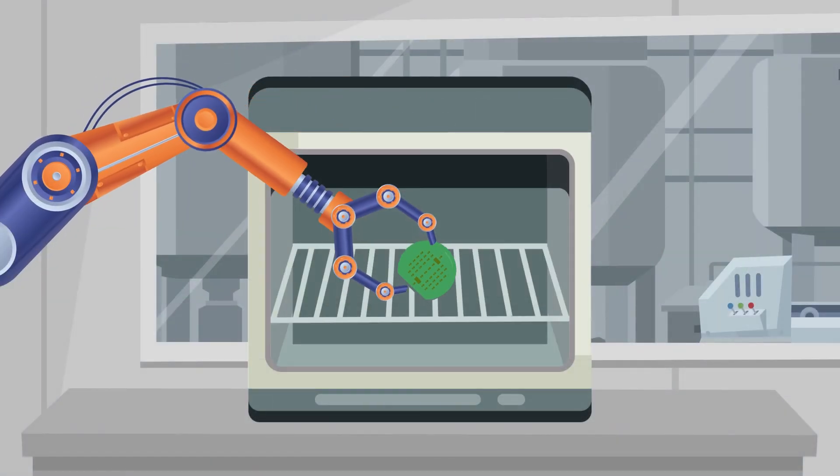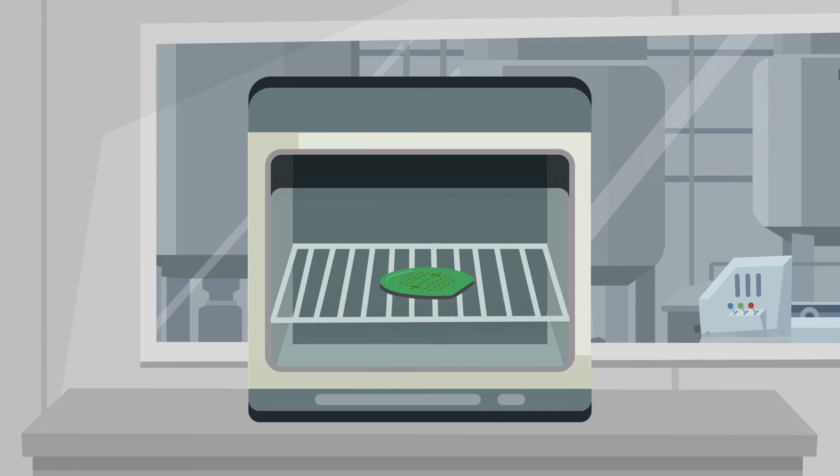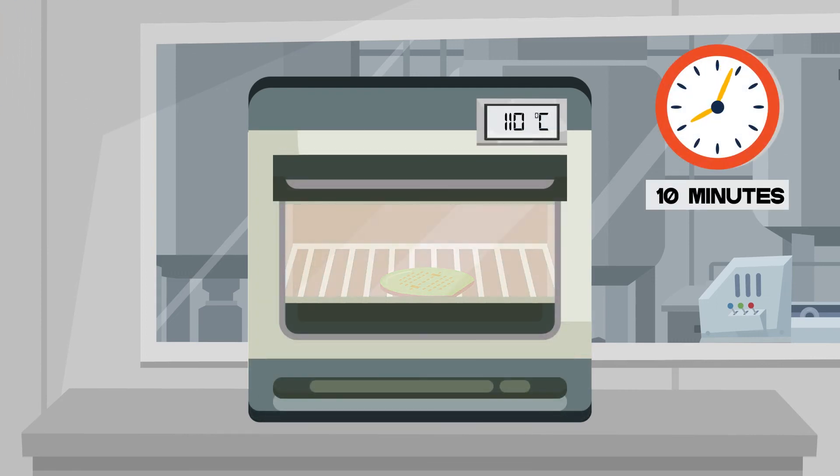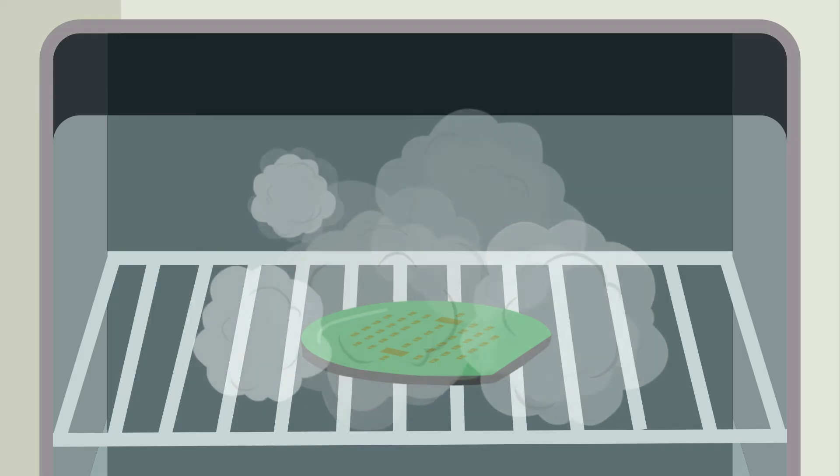Whether it is a wafer undergoing its initial exposure or one that has previously undergone processing, the procedure that follows remains the same. Thanks to the baking step, this is no longer a smooth wafer as it already has shapes on the surface.